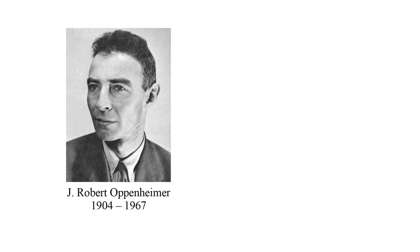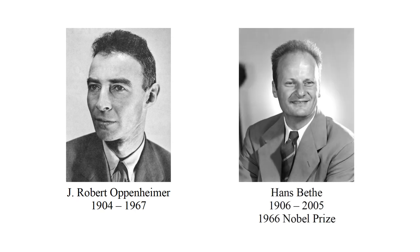Oppenheimer wrote his paper in 1929 while a physics professor at the University of California. Bethe wrote his paper nearly twenty years later in 1947 while a physics professor at Cornell University. In between, both played central roles in the Manhattan Project. Oppenheimer, as director of the Los Alamos Laboratory, oversaw all scientific aspects of the project while Bethe led the theoretical physics division.